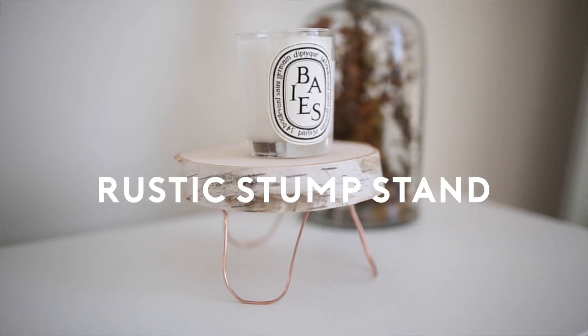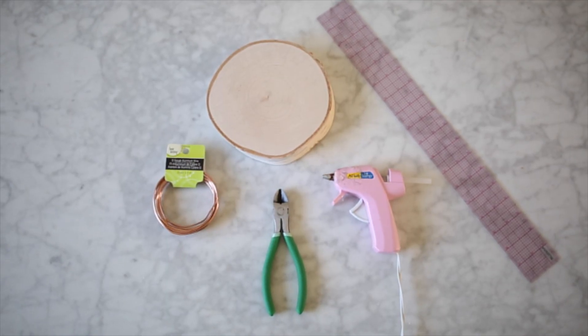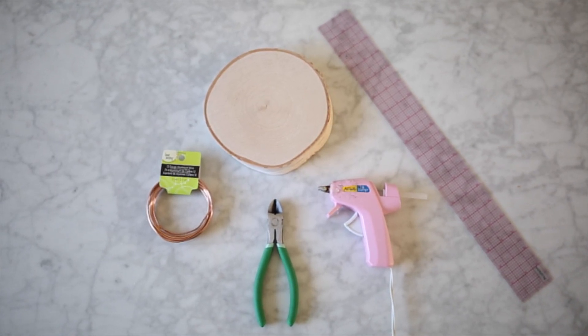For this rustic stump stand, you are going to need a little stump piece, some wire, a wire cutter, a hot glue gun, and lastly for this, you're just going to need a ruler.